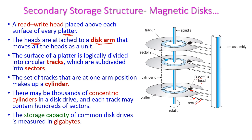The read/write heads are attached to the disk arm, which moves all around the platter. The surface of the platter is logically divided into circular tracks — there are thousands of tracks in a single platter. The tracks are further subdivided into sectors. The set of tracks that one arm position makes up is called a cylinder.